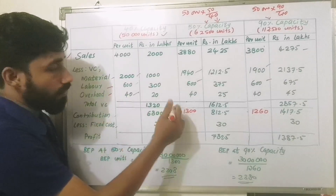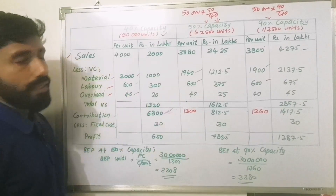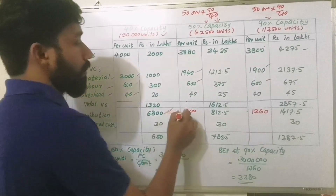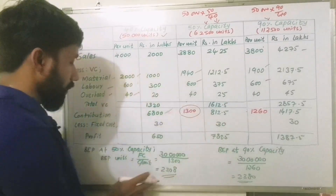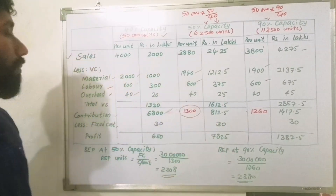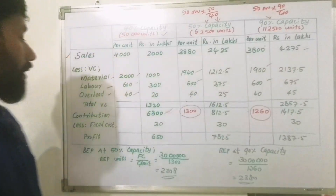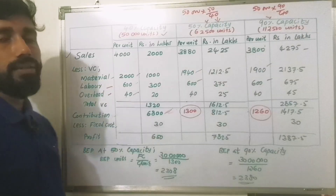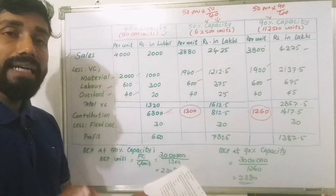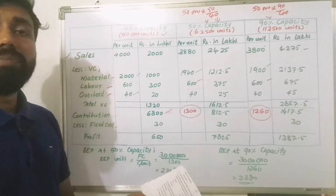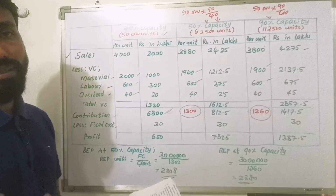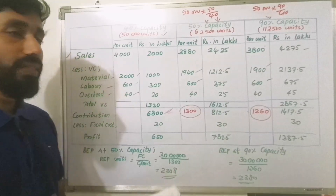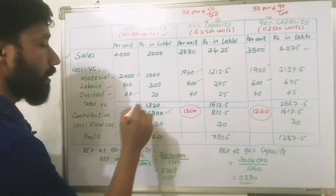If we have the contribution, we can derive the BEP. Fixed cost is deducted from contribution to get profit. In our question, the fixed overhead is 60% of Rs. 100, and for 50,000 units that gives Rs. 30 lakhs fixed cost.